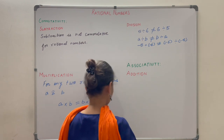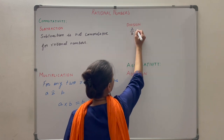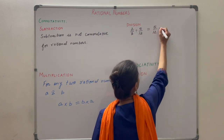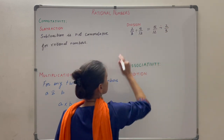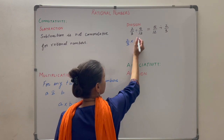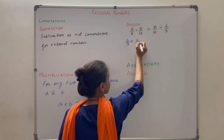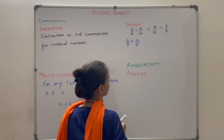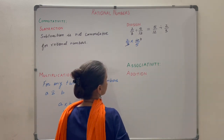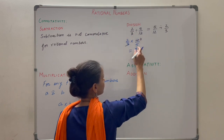What about rational numbers? Suppose you have two rational numbers: 2 by 3 and 5 by 12. Is 2 by 3 divided by 5 by 12 equal to 5 by 12 divided by 2 by 3? Solving the left side: write 2 by 3, change division to multiplication, and take the reciprocal of 5 by 12 to get 12 by 5. Cancel 3 and 12 to get 4, so numerator is 4 into 2 equals 8 and denominator is 1 into 5 equals 5, giving 8 by 5.